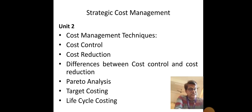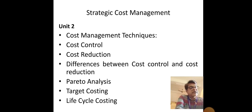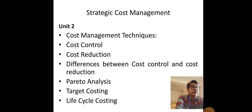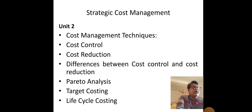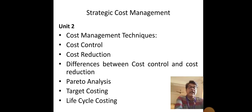Cost control focuses on reducing the total cost incurred for producing a commodity, whereas cost reduction talks about reducing the unit cost of your product. For example, last month we produced a pencil for rupees 5; now we are able to reduce the unit cost from 5 to 4.50 — that is cost reduction. For cost control: for producing 10 pencils we incurred rupees 50 last month; now we can reduce this total cost from 50 to rupees 49 — we have saved rupee 1. That is cost control.